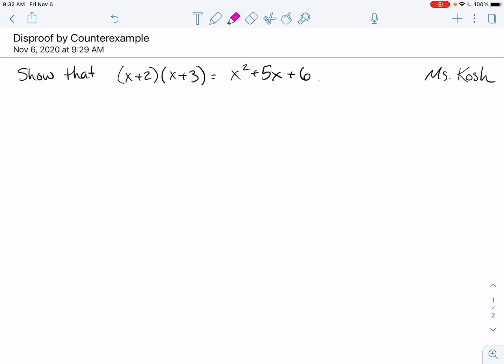IB likes to do a lot of the show that. And so what I find sometimes is that my kids will be like, oh, okay, well let's let x equal 7. And then we plug in 7, and we get 7 plus 2 times 7 plus 3 is equal to 7 squared plus 5 times 7 plus 6. And they'll say, okay, so 9 times 10 is equal to 49 plus 35 plus 6. That's 41 plus 49 is equal to 90. They'll say, oh, 90 equals 90, therefore it's true.